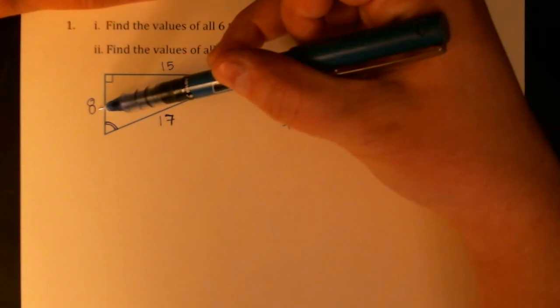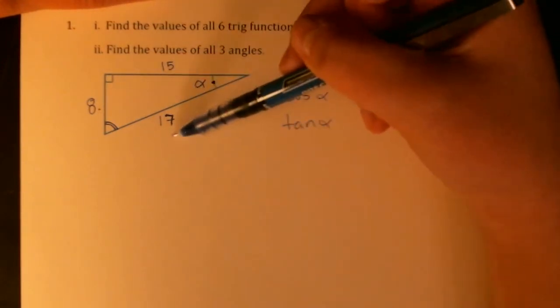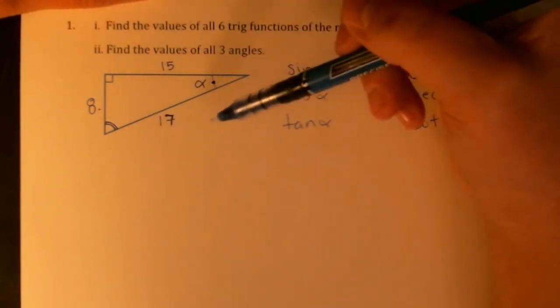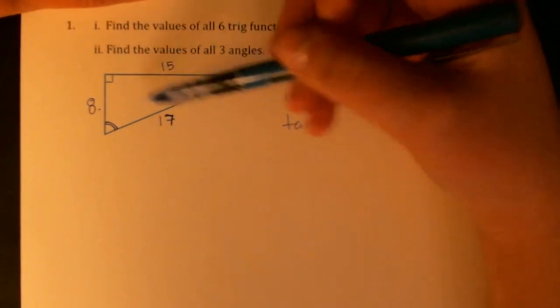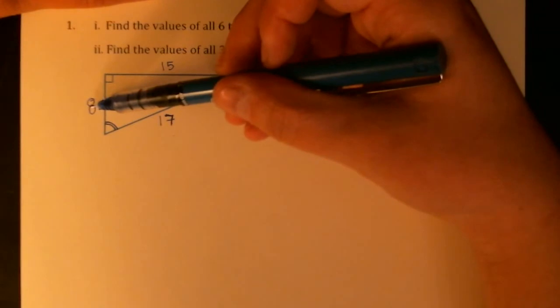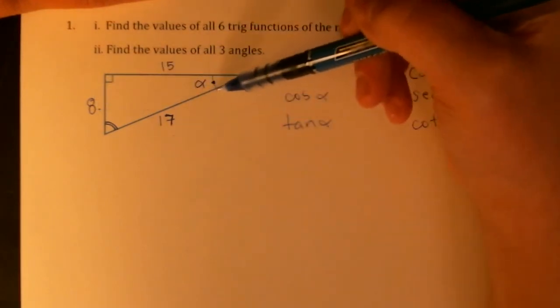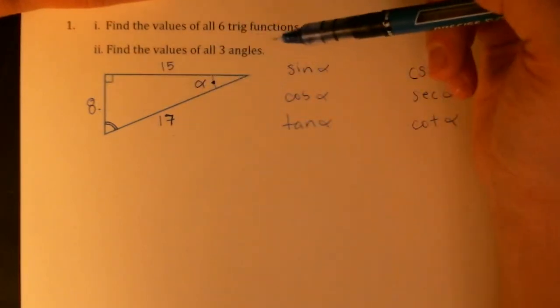Sine of alpha is opposite over hypotenuse. So it doesn't matter how I orient this triangle, hypotenuse is always going to be the longest side and it's always across from the right angle. And opposite will always be straight across and in no way making any contact with angle alpha.